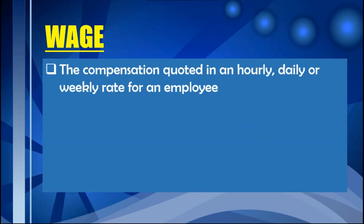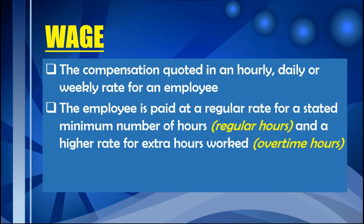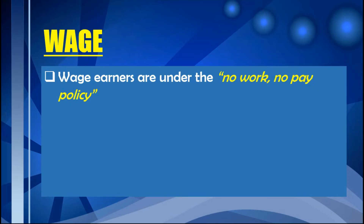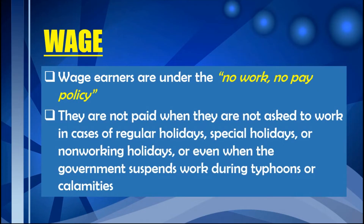Next is wage — the compensation quoted in an hourly, daily, or weekly rate for an employee. The employee is paid at a regular rate for a stated minimum number of hours (regular hours) and receives a higher rate for extra hours worked (overtime hours). Wage earners are paid more per hour on holidays, Sundays, and evenings. However, they are under the no-work, no-pay policy — they are not paid when not asked to work, including regular holidays, special holidays, non-working holidays, or when the government suspends work during typhoons or calamities, meaning they are only paid for the actual number of hours or days worked.